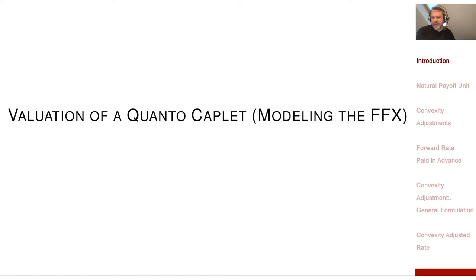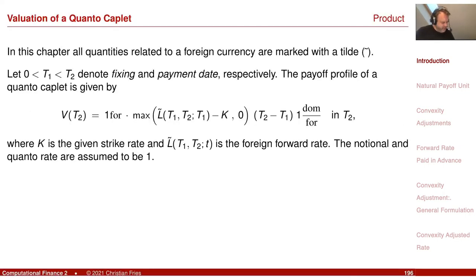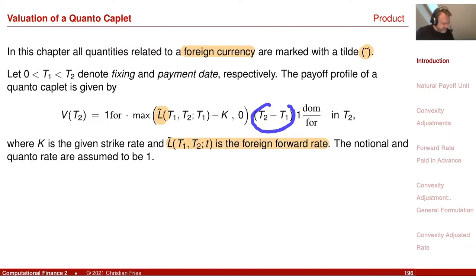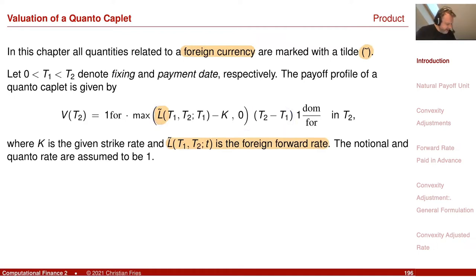The quanto caplet was more interesting. We were paying the foreign interest rate — a foreign quantity, where all foreign quantities get a tilde. We are paying the foreign forward rate, which is unitless apart from one divided by time. But here there is a multiplication with the period length, making it a unitless amount. This was then paid in domestic currency, so the foreign currency actually cancels.